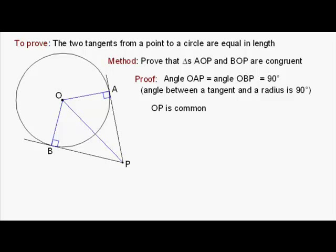OP is common. Now, that doesn't mean I'm being rude about it. It just means that it's the same side in both triangles. OP is common is the way that a lot of mathematicians would describe that situation. And thirdly, those two lengths are the same. Why? Because they're both radii of the circle.